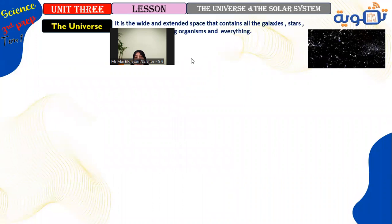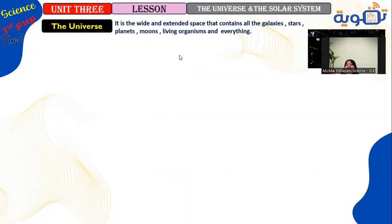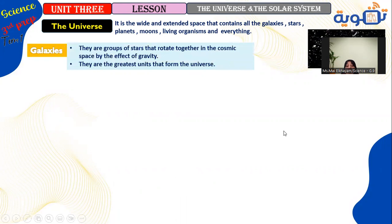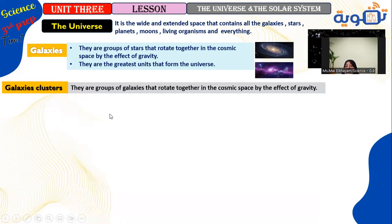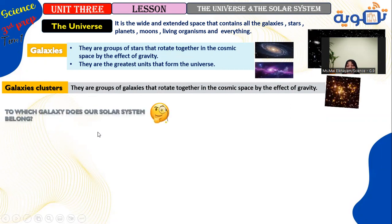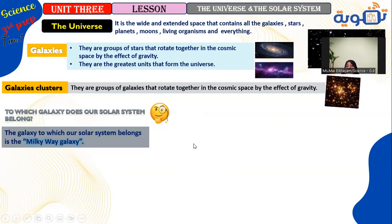Unit 3, Lesson 1: The Universe and the Solar System. The universe is the wide, extended space containing all galaxies, stars, planets, moons, living organisms, and everything. Galaxies are the building units of the universe — groups of stars rotating together in cosmic space by gravity. Galaxies have different shapes according to the arrangement of their stars. Galaxy clusters are groups of galaxies rotating together by gravity. Our solar system belongs to the Milky Way galaxy.